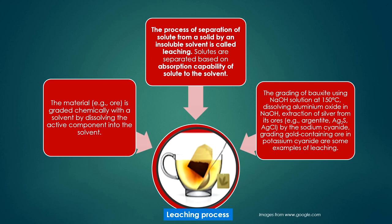Leaching is the separation of solute from a solid by an insoluble solvent, based on the adsorption or absorption capacity of the solute to the solvent. The ore is treated chemically with a solvent to dissolve the valuable component. Examples include leaching of alumina using sodium hydroxide solution at 150°C, dissolving aluminum oxide in sodium hydroxide, extraction of silver from ores such as argentinite (silver sulfide) and silver chloride using sodium cyanide, and leaching of gold-containing ore in potassium cyanide.